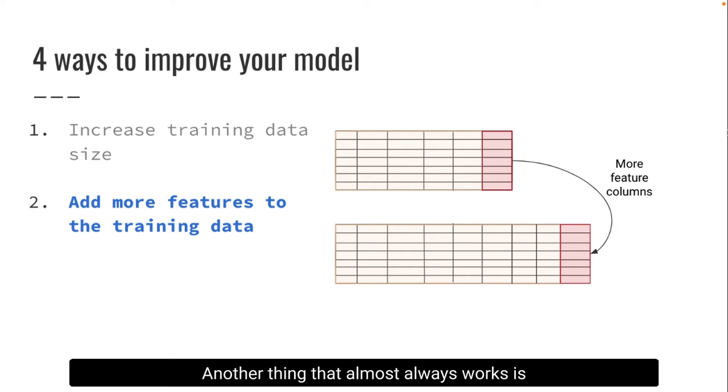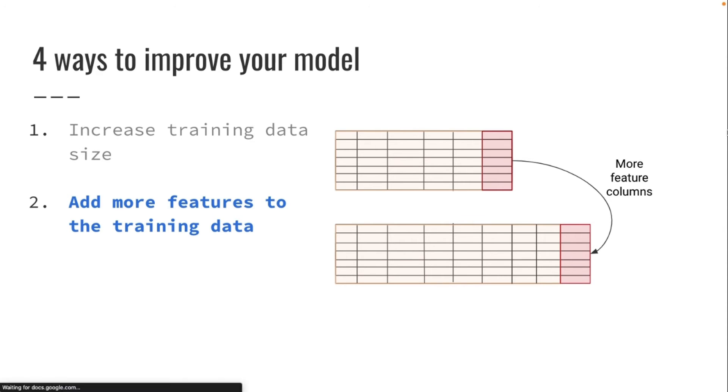Another thing that almost always works is adding more features to the training data. In this case, this means adding more columns. So as features, we can use for example only past values of rides, but also we can try to include external factors. For example, if you have access to a calendar of holidays in the US, that's something that you might need to use. Why? Because during holidays, the patterns in terms of taxi demand change a lot. There are probably spikes in taxi demand before Christmas. So adding this information to the model, it means adding more columns to this dataset, is for sure going to help your model get better results.